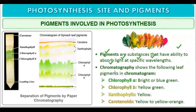Chromatography is the technique with the help of which we can separate the various pigments, and the chromatogram shows the separated pigments. The pigments of photosynthesis are: chlorophyll a, which is bright blue-green in color; chlorophyll b, which is yellow-green; xanthophylls, which are yellow; and carotenoids, which are yellow to yellow-orange in color.